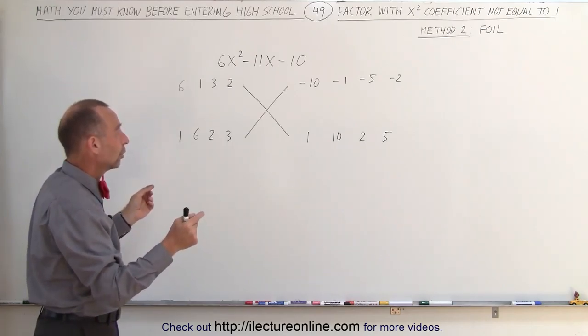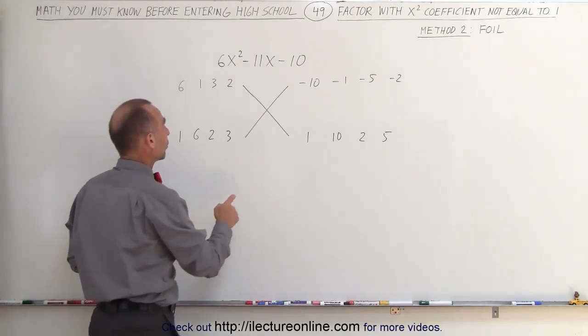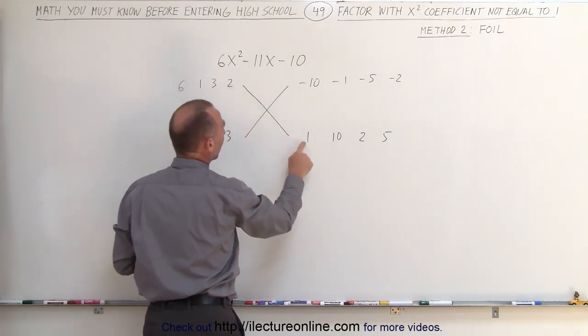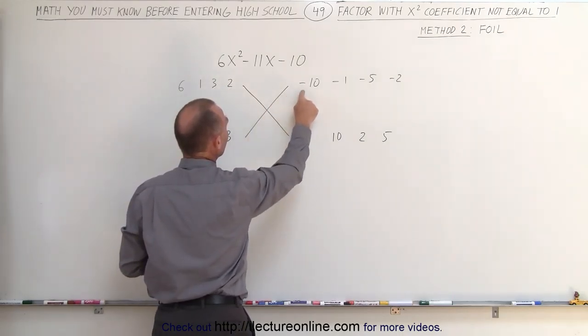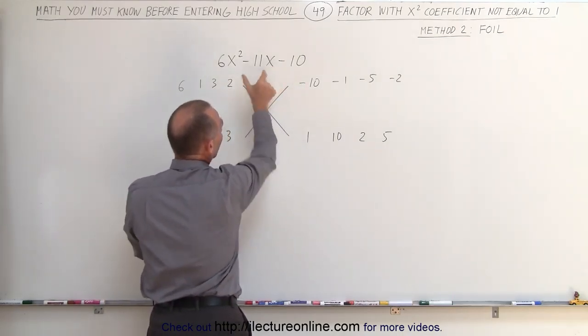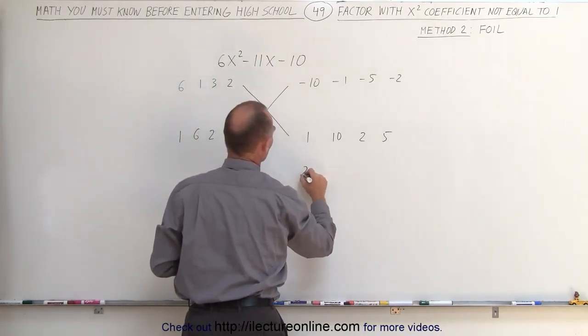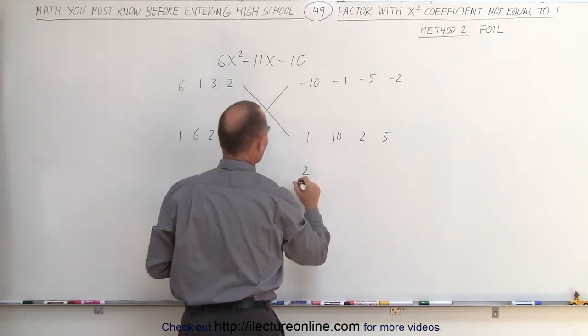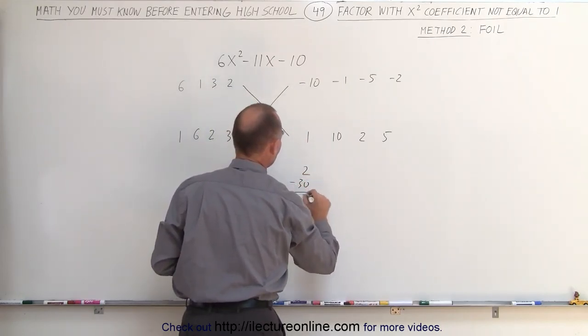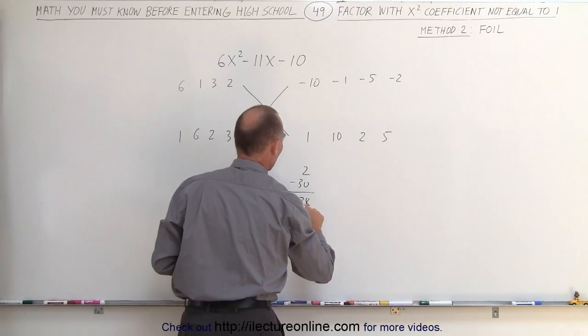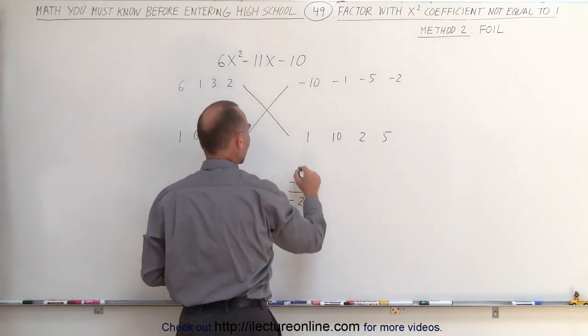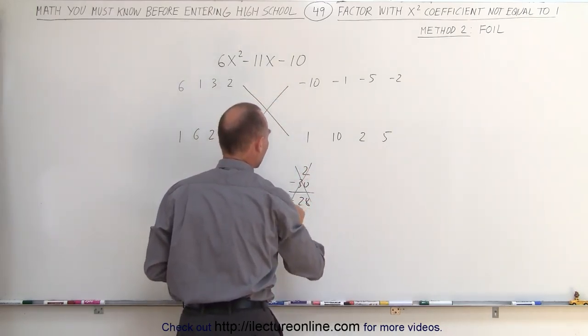We're looking for the multiplication. For example, I'm going to multiply the 2 times 1, and multiply 3 times negative 10. And when I add them together I should get the middle term. So let me show you an example. Here we have 2 times 1, which is 2, and 3 times negative 10, which is negative 30. When I add them together I get negative 28, which is not equal to negative 11, so that's not a valid combination.